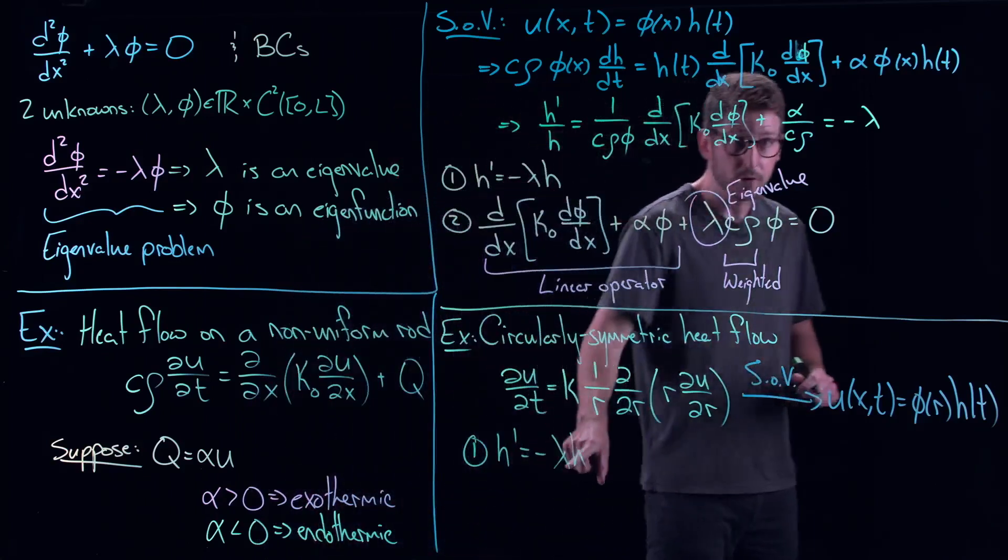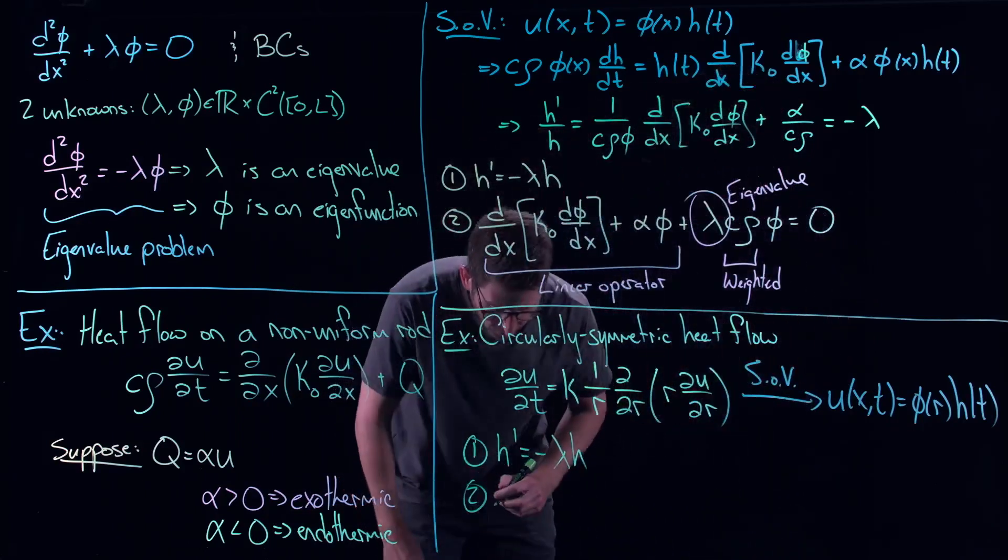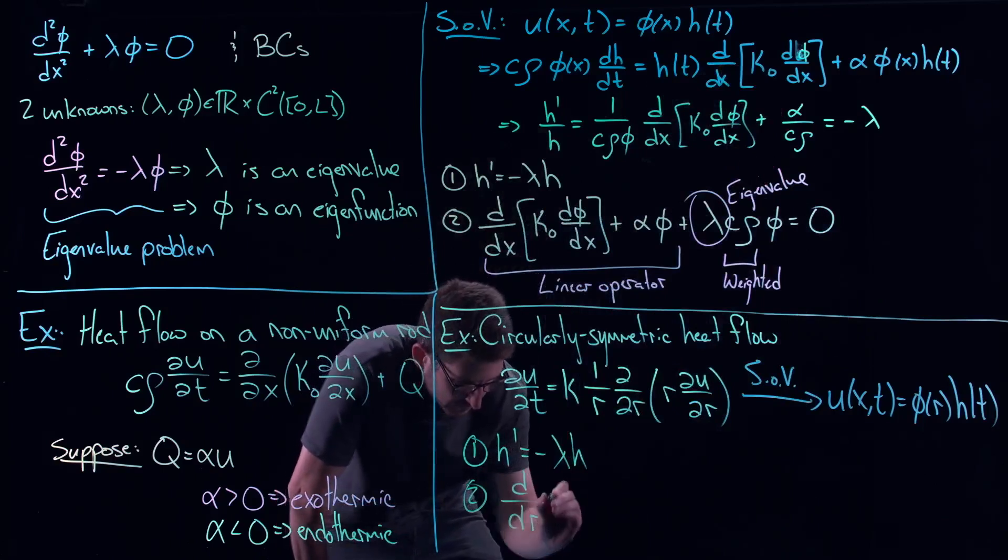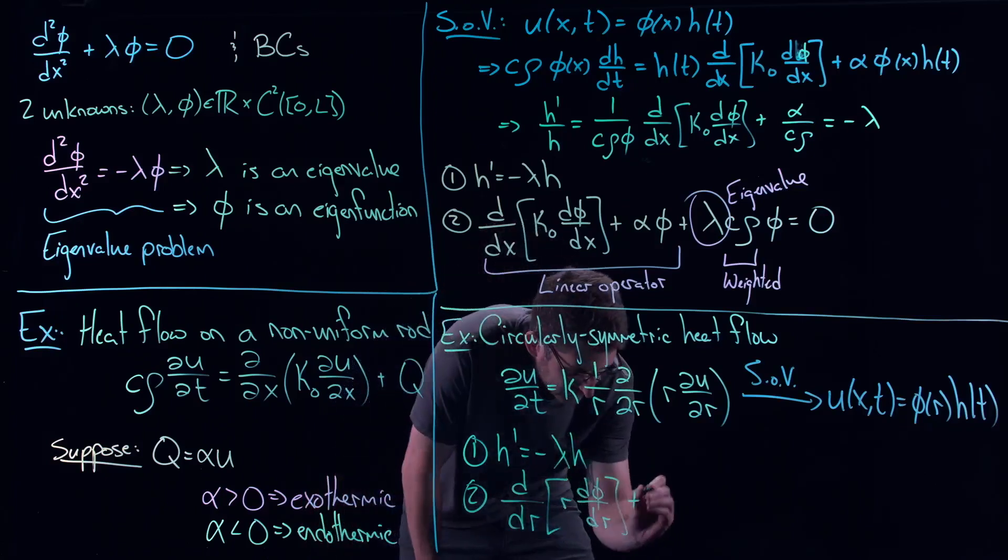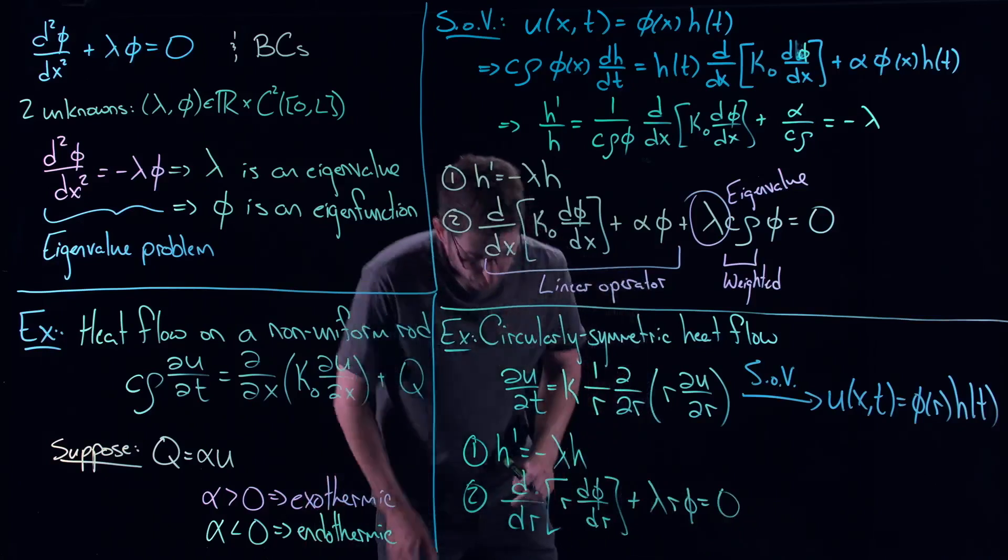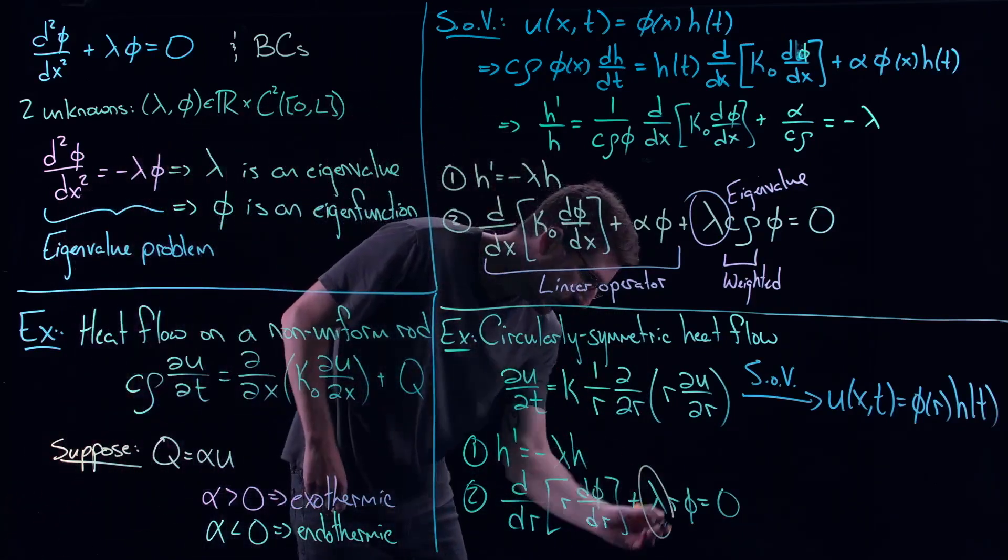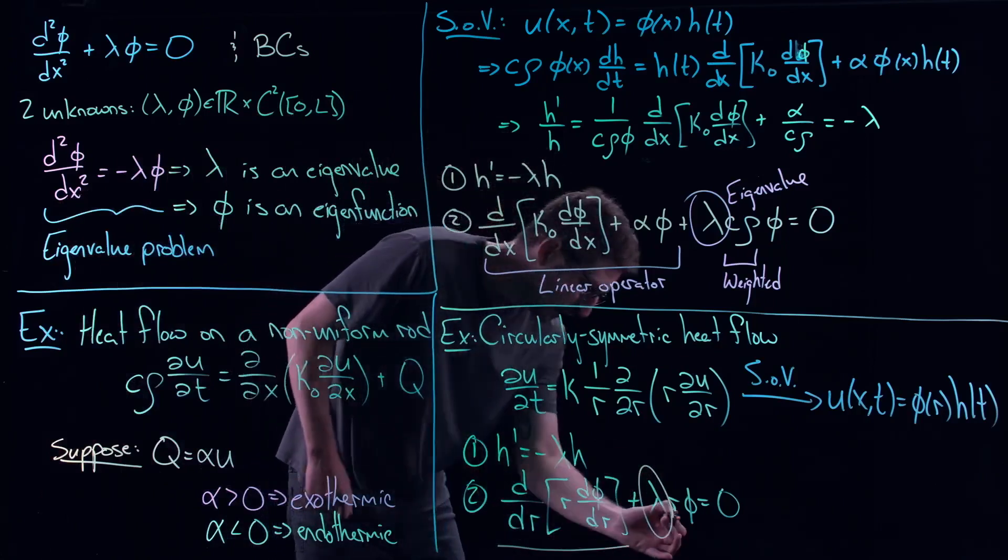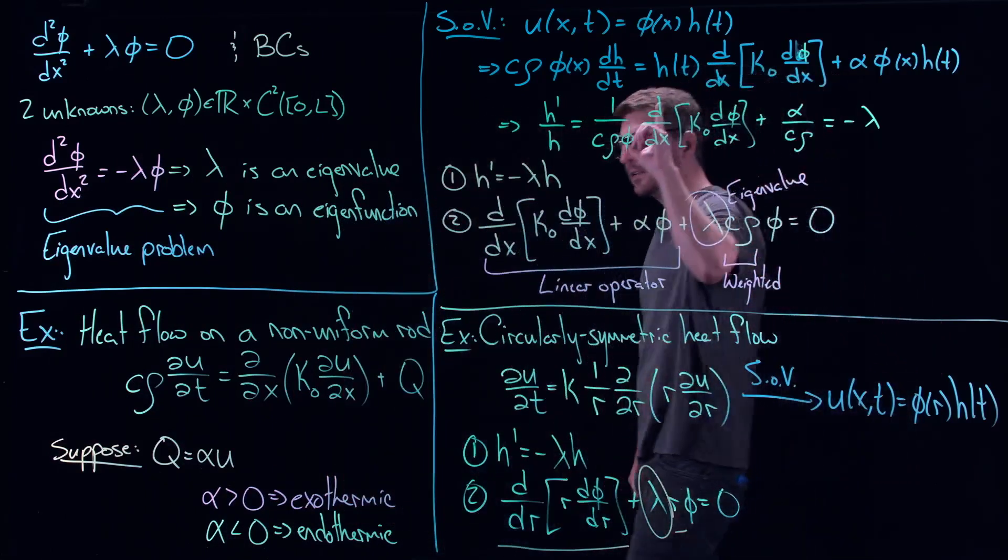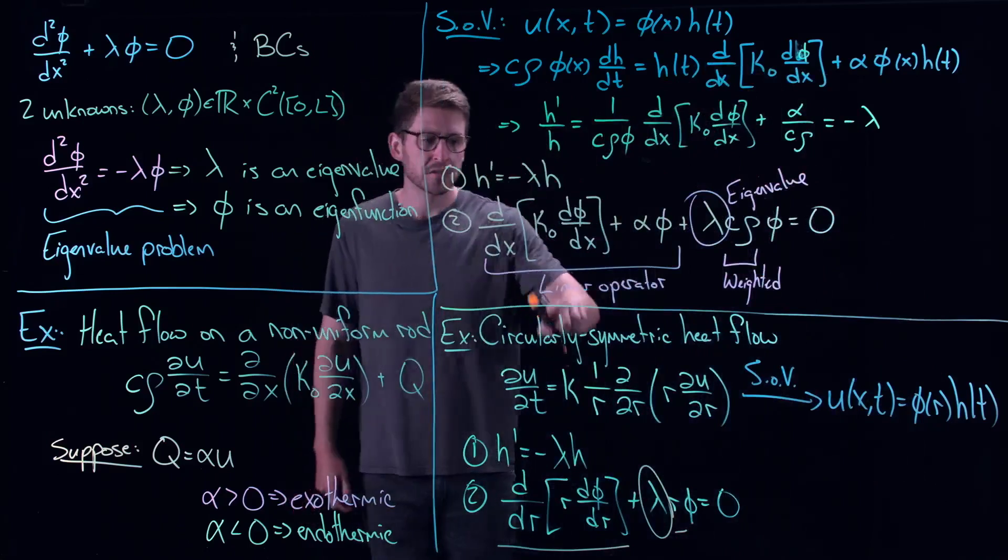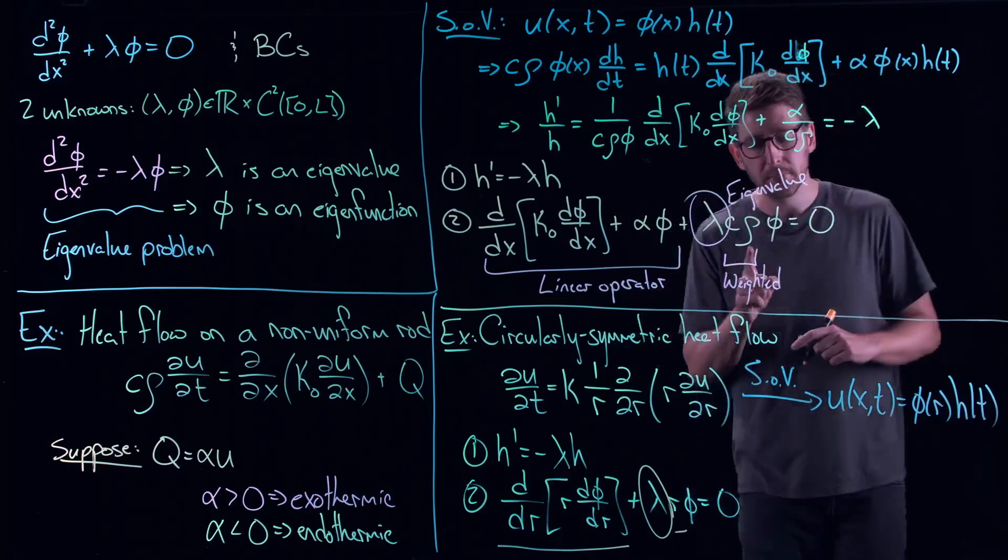But the eigenvalue is determined by an eigenvalue problem that looks like this: d/dr(r·dφ/dr) + λr·φ = 0. So you try and derive that yourself. But again, here, eigenvalue. Here's my linear operator. Here's a weight. And I've got myself a nice eigenvalue problem. Now, something I didn't talk about as we sort of went through these two examples was there's also boundary conditions that I have to consider here. The problem technically is not complete until you have boundary conditions added. I just wanted to show you how these things show up.